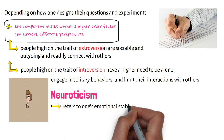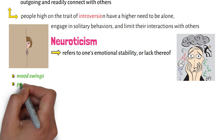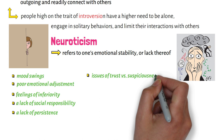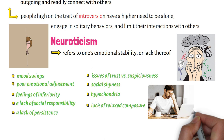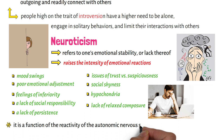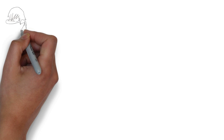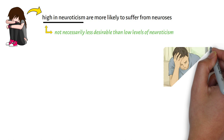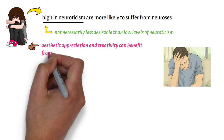Neuroticism refers to one's emotional stability, or lack thereof. It incorporates mood swings, poor emotional adjustment, feelings of inferiority, a lack of social responsibility, a lack of persistence, issues of trust versus suspiciousness, social shyness, hypochondria, and the lack of relaxed composure. Neuroticism raises the intensity of emotional reactions, and since it is a function of the reactivity of the autonomic nervous system, it is an inherited characteristic. High neuroticism is not necessarily less desirable — for example, aesthetic appreciation and creativity can benefit from an individual being highly emotional.